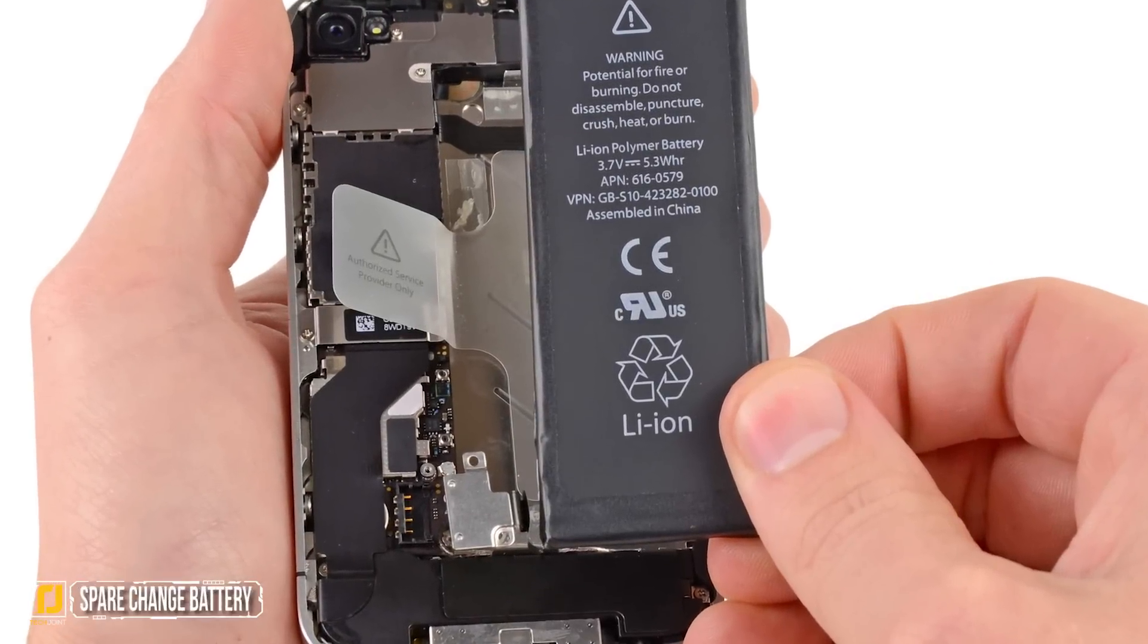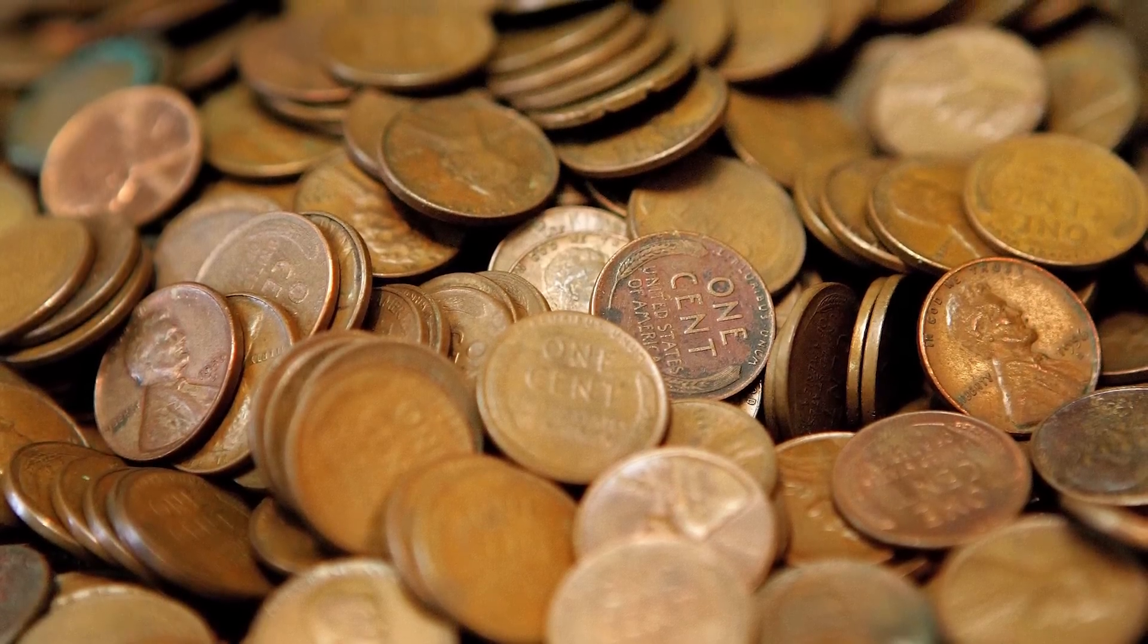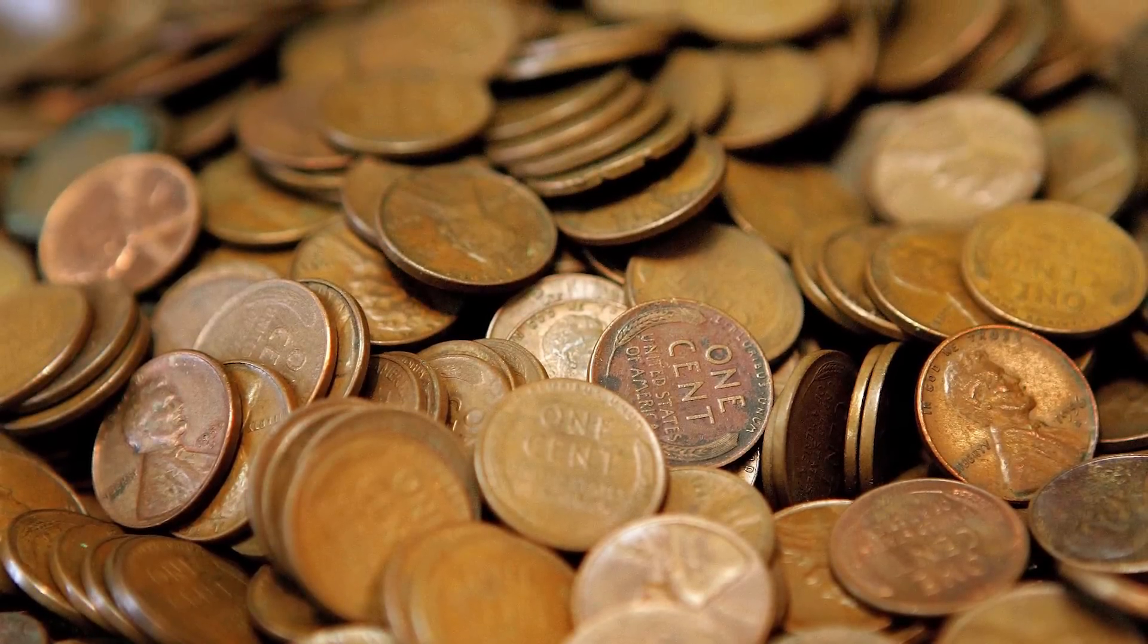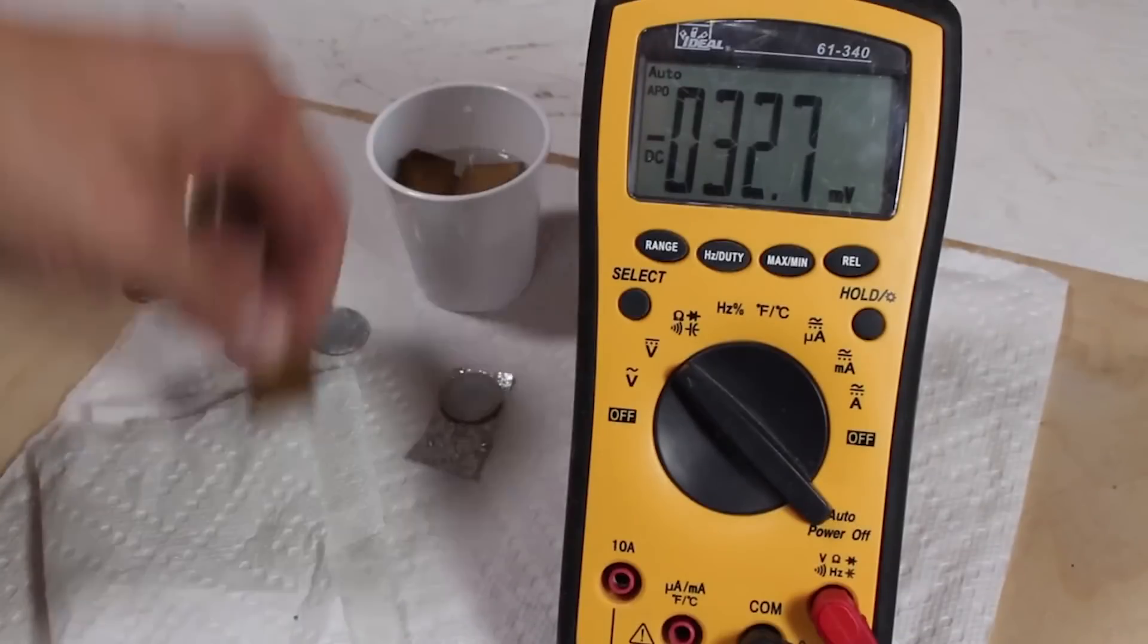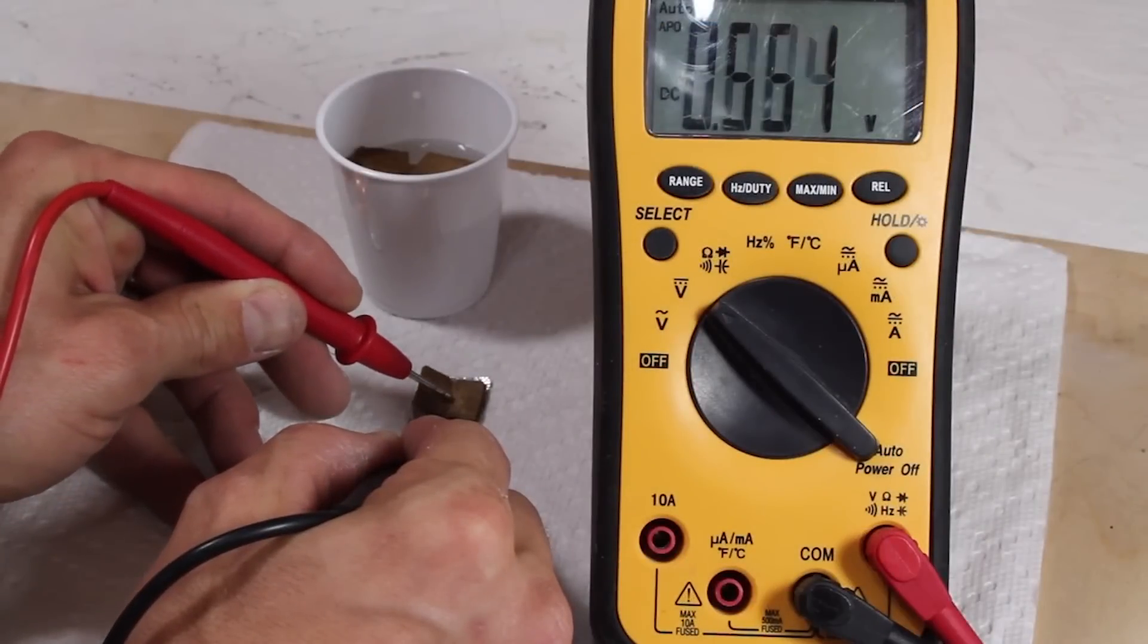Number 6: Spare Change Battery. Pennies, at least those dated after 1982, and zinc washers, along with a little DIY magic, can be used to power your devices. Although this admittedly cool battery trick isn't powerful enough to efficiently power much more than a calculator.